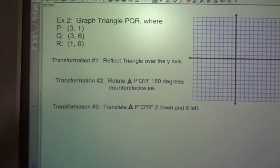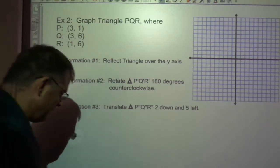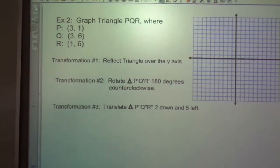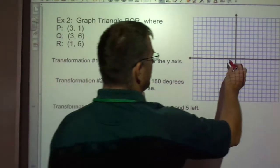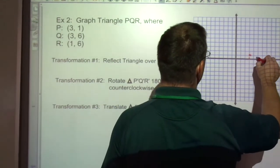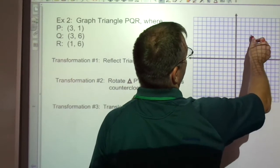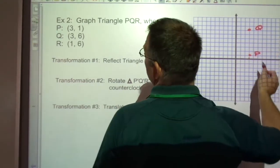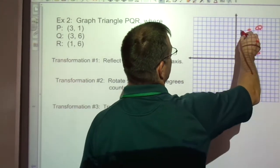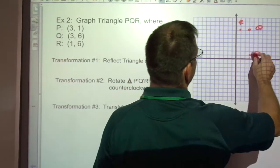Here's an example for you. Go ahead and try this one, pause it, and then check. When you're ready to restart, here we go. P is 3, 1. Q is 3, 6. And R is 1, 6. So here's my triangle.